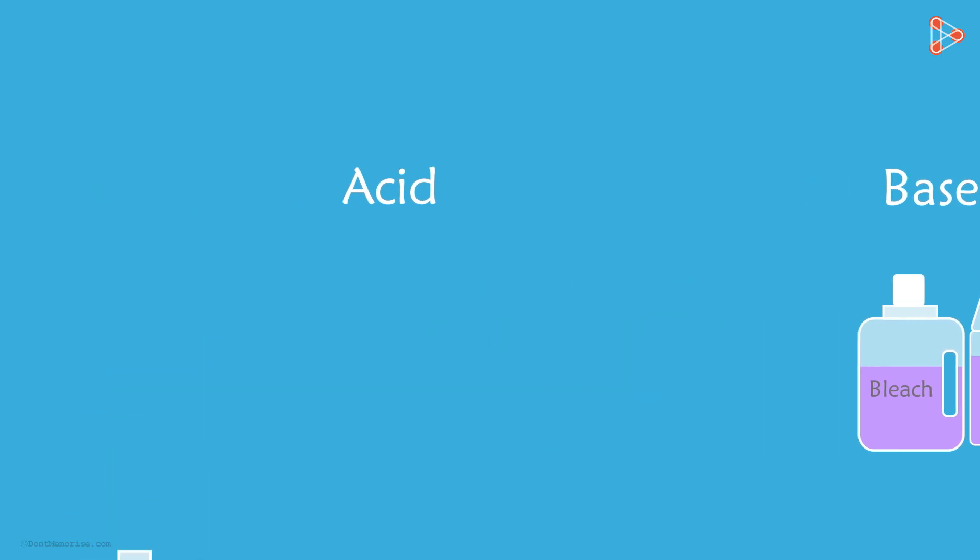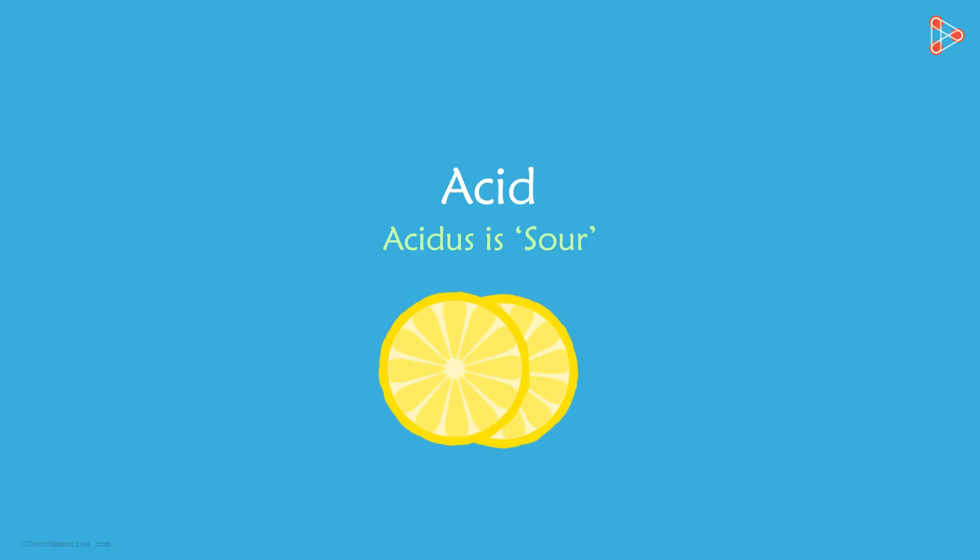The word acid sounds scary, right? It comes from the Latin word acidus which means sour. Yes, most acids taste sour. Lemons for instance have acid and you surely know how lemons taste. And we'd also seen that acids turn blue litmus paper red.